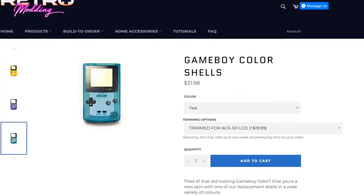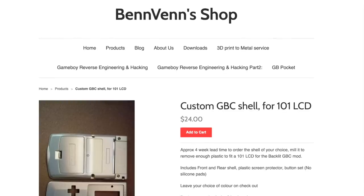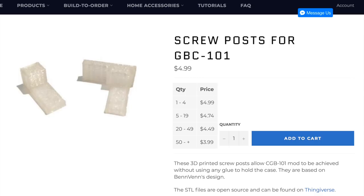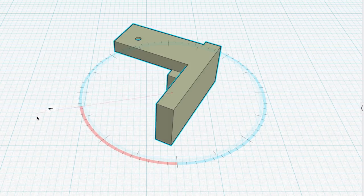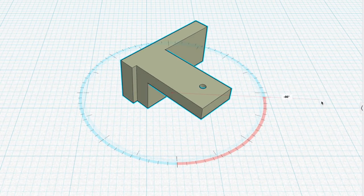Thankfully, there's a more economical and easier option. At the time I filmed this, both Benven and Retro Modding sell pre-modified shells. They'll also sell you just the little brackets if you want, though if you have a 3D printer, the STL files that Benven designed are available freely.